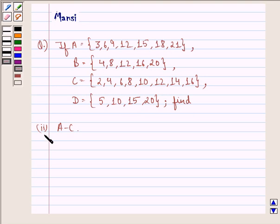and D equals to the set 5, 10, 15, 20. Then find A minus C. Let us see the solution to this one.